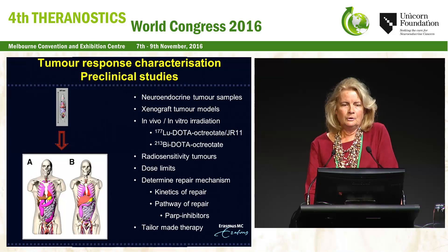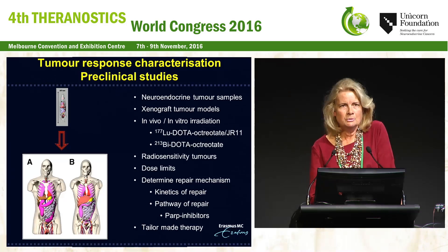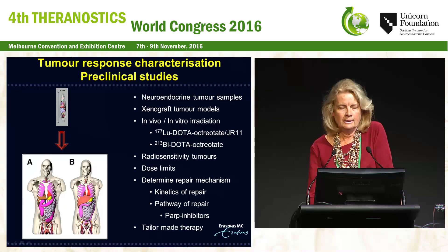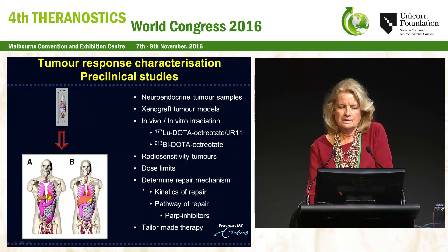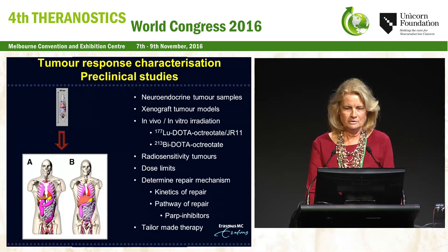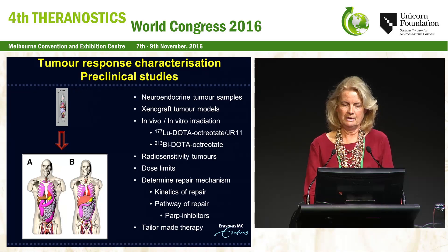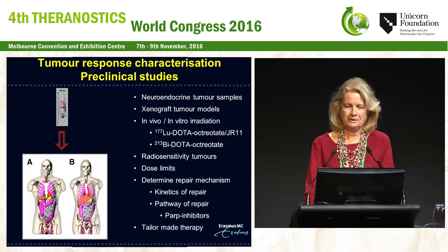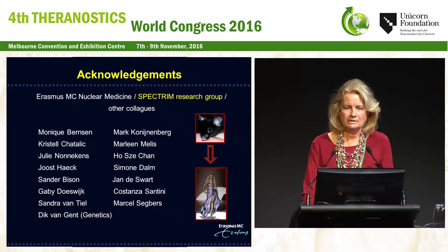In summary, preclinical studies can help us in the characterization of tumor response. We can use neuroendocrine tumor samples or xenograft tumor models for in vivo and in vitro irradiation effects. They can tell us about radio sensitivity of different tumor samples or types, give estimation of dose limits to normal organs, and allow us to investigate DNA repair mechanisms — the kinetics and pathways of DNA repair — and perhaps repair pathway inhibitors can help improve therapeutic effects in patients, ultimately leading to optimized and tailor-made treatment schedules. I would like to thank my colleagues and former colleagues in our department, and I thank you for your attention.